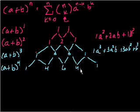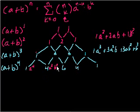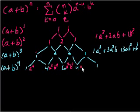a plus b to the fourth: it's 1a to the fourth b to the zero, plus 4a cubed b to the 1, plus 6a squared b squared — which makes sense, since this is the middle term and a and b have the same exponent — plus 4a b cubed, plus 1b to the fourth, where a to the zero is just 1, so we don't write it.